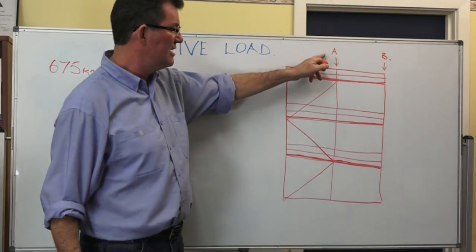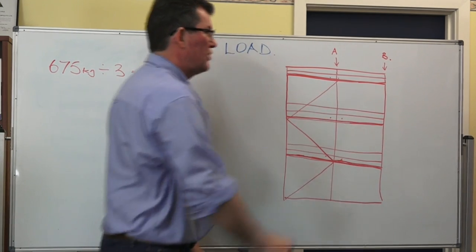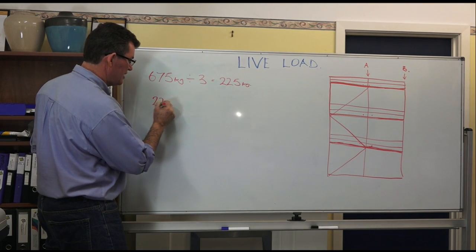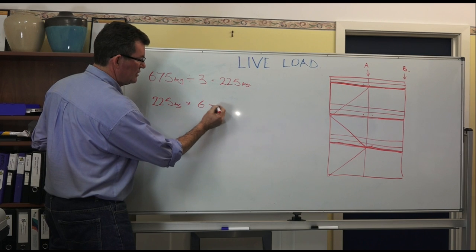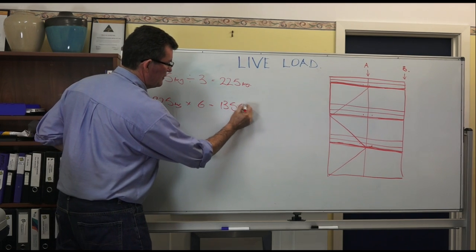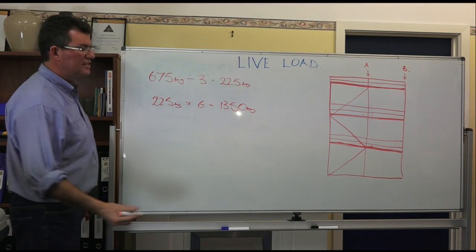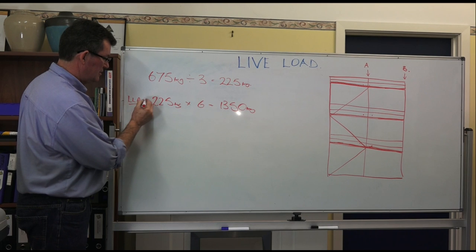If I look at standard A I can see that there are six working platforms attached to standard A. So then I'll go 225 kilos times 6 equals 1350 kilos. The live load on standard A is 1350 kilos.